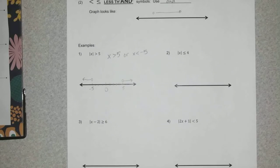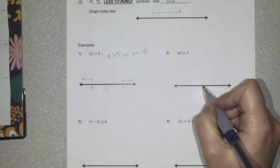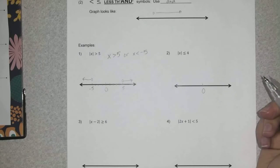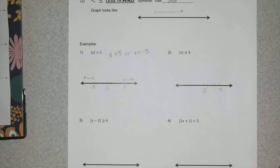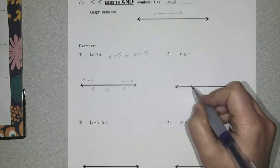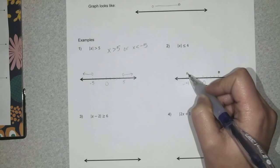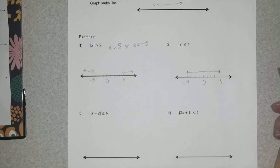Example two: the absolute value of x is less than or equal to 4. Less than means it's going to be an 'and' inequality, so we'll be shading between the two answers. We're talking about the distance away from zero being less than four. The only numbers that would satisfy this inequality are any number that's closer to zero than four — any number between negative four and four.